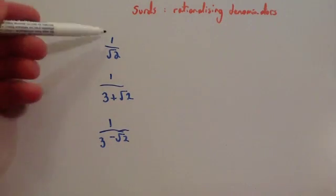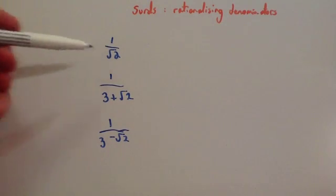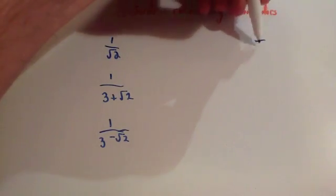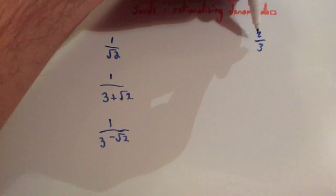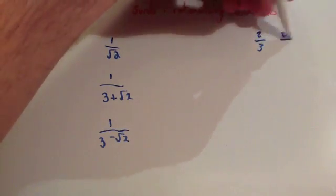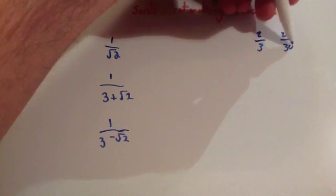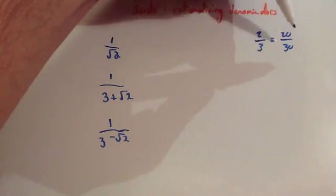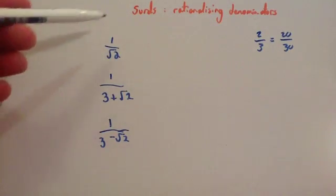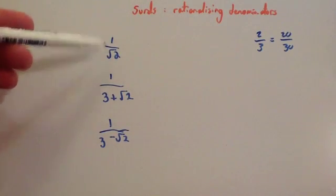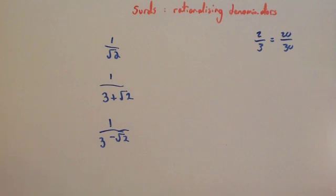For a simple surd on the denominator, you multiply top and bottom by that surd. Remember with a fraction, if you had something like 2 thirds, you can get an equivalent fraction — if you times the top line by 10 you'd get 20, and if you times the bottom line by 10 you'd get 30. These are called equivalent fractions; obviously 2 thirds is the same as 20 over 30. So with a fraction with a surd on the bottom line, we can times the top and the bottom by the same thing and get an equivalent fraction.